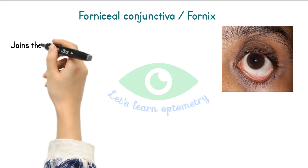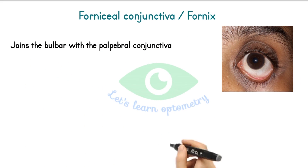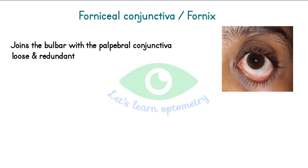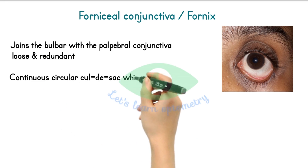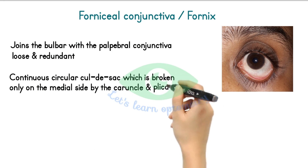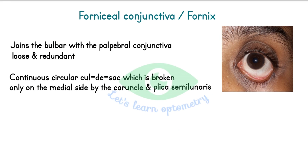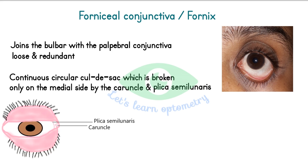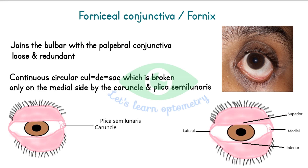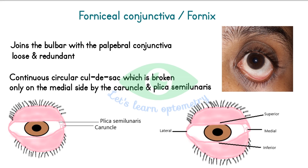The conjunctival fornix joins the bulbar with the palpebral conjunctiva. It is loose and redundant, forming a continuous circular cul-de-sac which is broken on the medial side by the caruncle and the plica semilunaris. The fornix can be divided into superior, inferior, medial, and lateral portions.